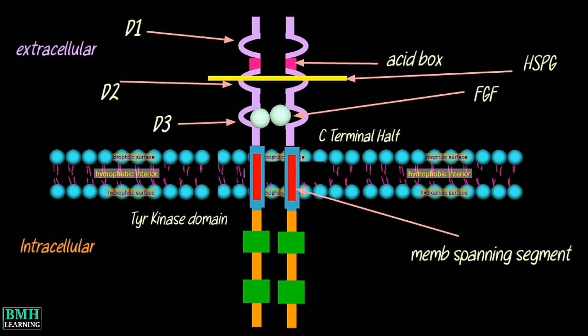The extracellular portion of the protein interacts with Fibroblast Growth Factor, setting in motion a cascade of downstream signals, ultimately influencing mitogenesis and differentiation.